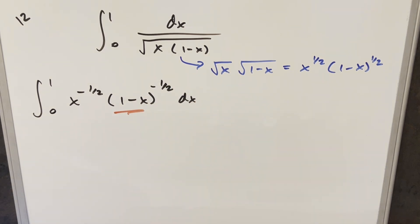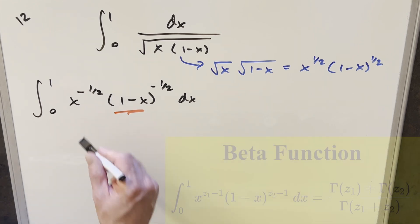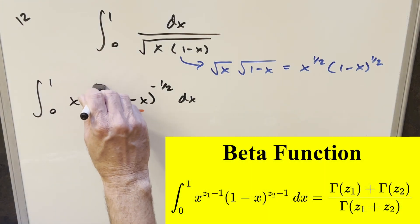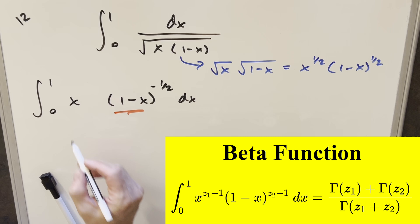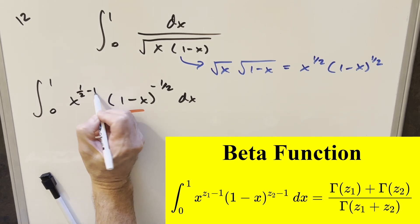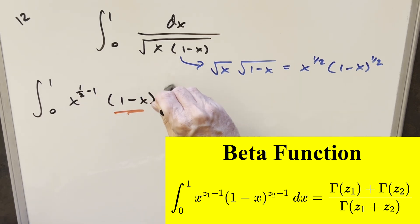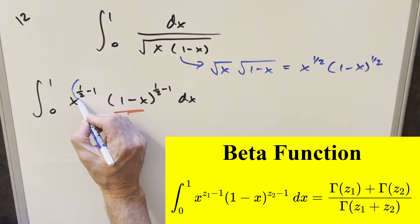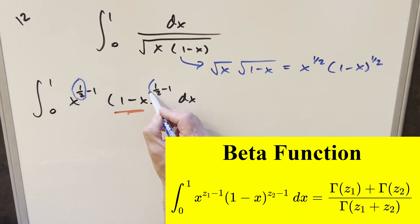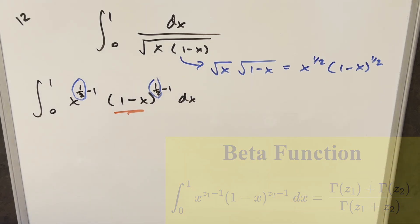And then from here, what I want to notice is this is basically perfectly set up for us to use the beta function. I'm going to do one little thing to get it to match the formula you see. For minus 1 half, I can write this as 1 half minus 1, and I can do the exact same thing over here. And so that way, our input for the beta function is going to be just the 1 half here. And now we can just kind of use the formula.